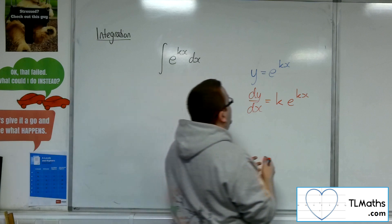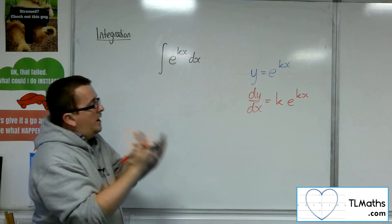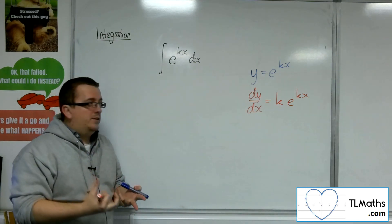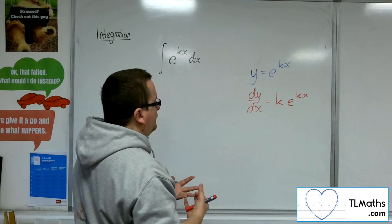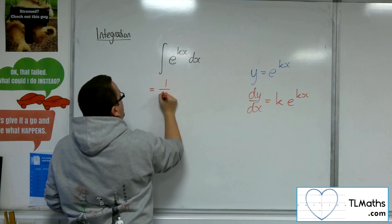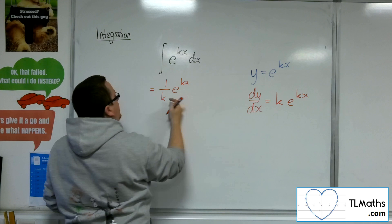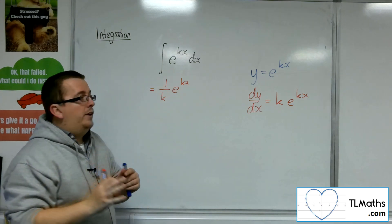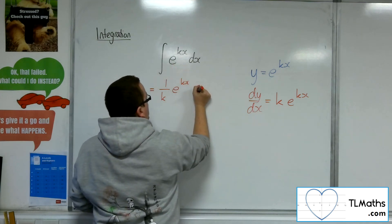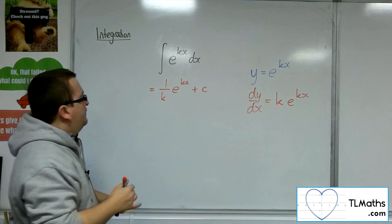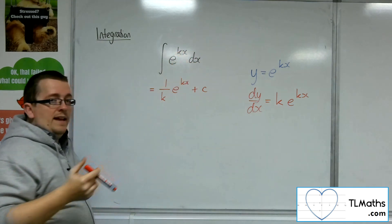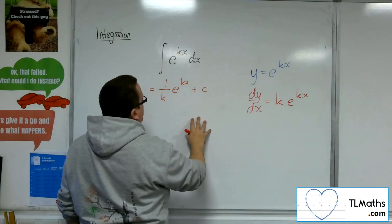Now when we're integrating, obviously we need to get ourselves back, and what we're going to need to do is divide through by that k in order to reverse engineer this process. So when we integrate, we would need to have 1 over k times e to the kx — we need that 1 over k as a coefficient of e to the kx so that when I differentiate this I get back to that, plus the constant of integration c. So the c will differentiate to 0.